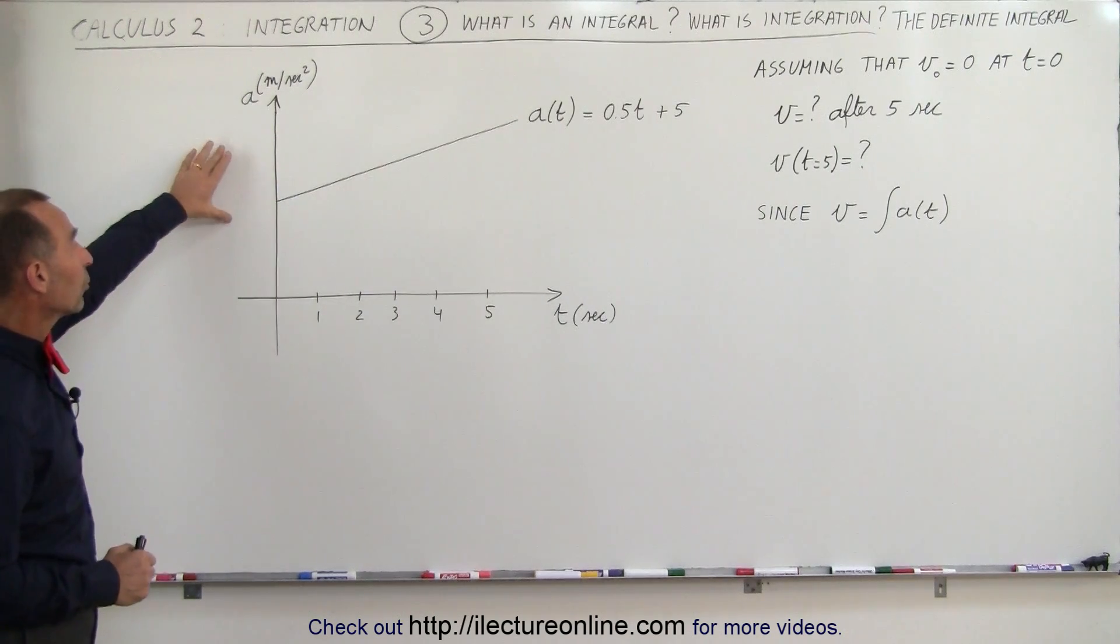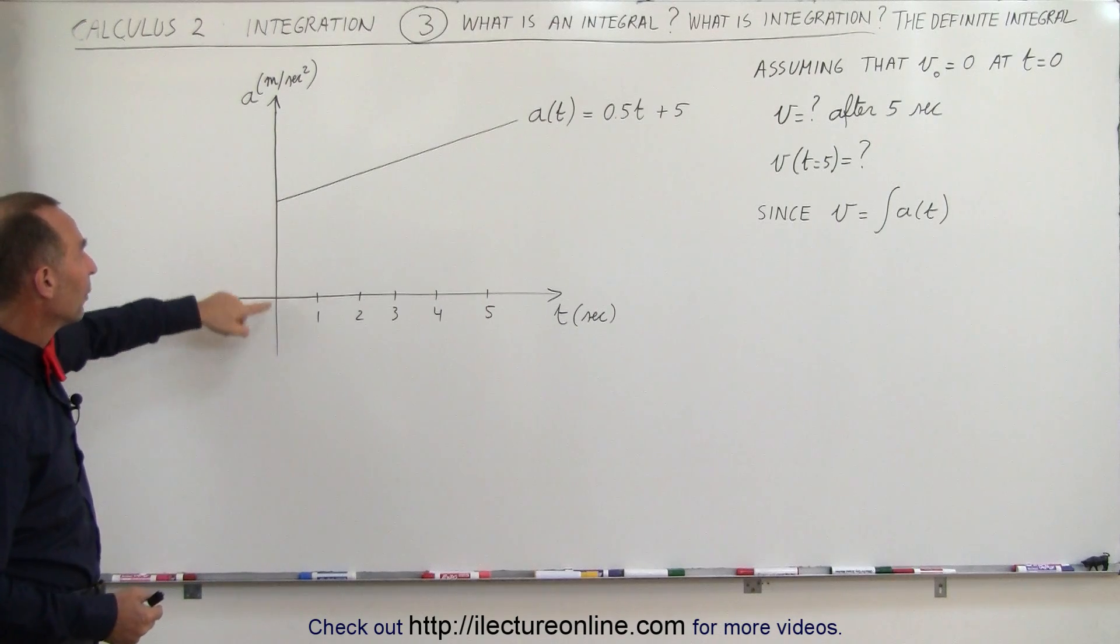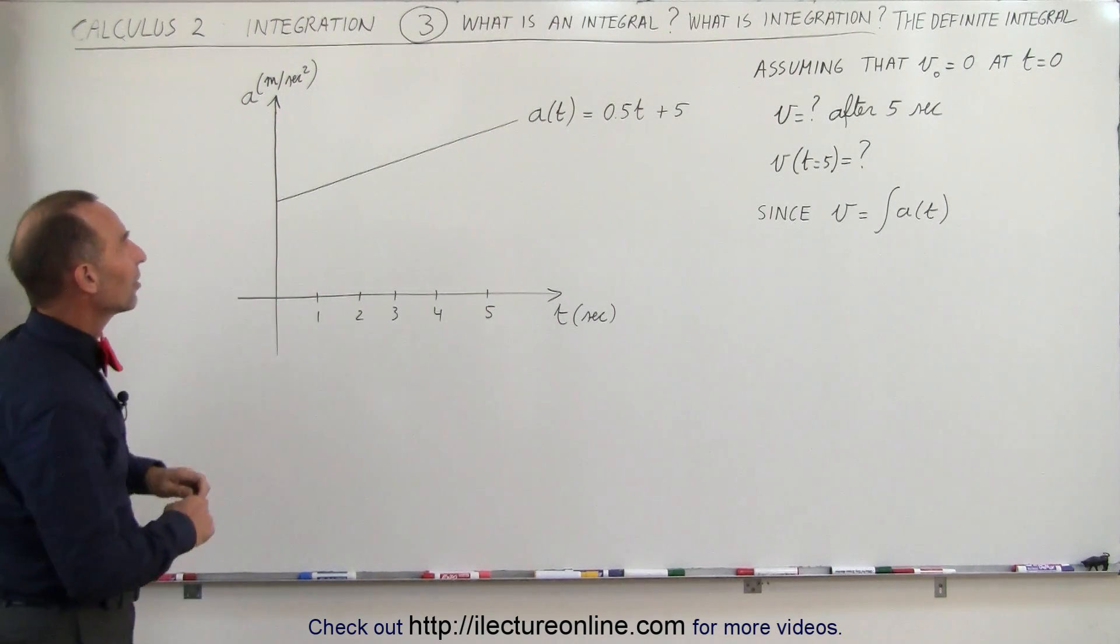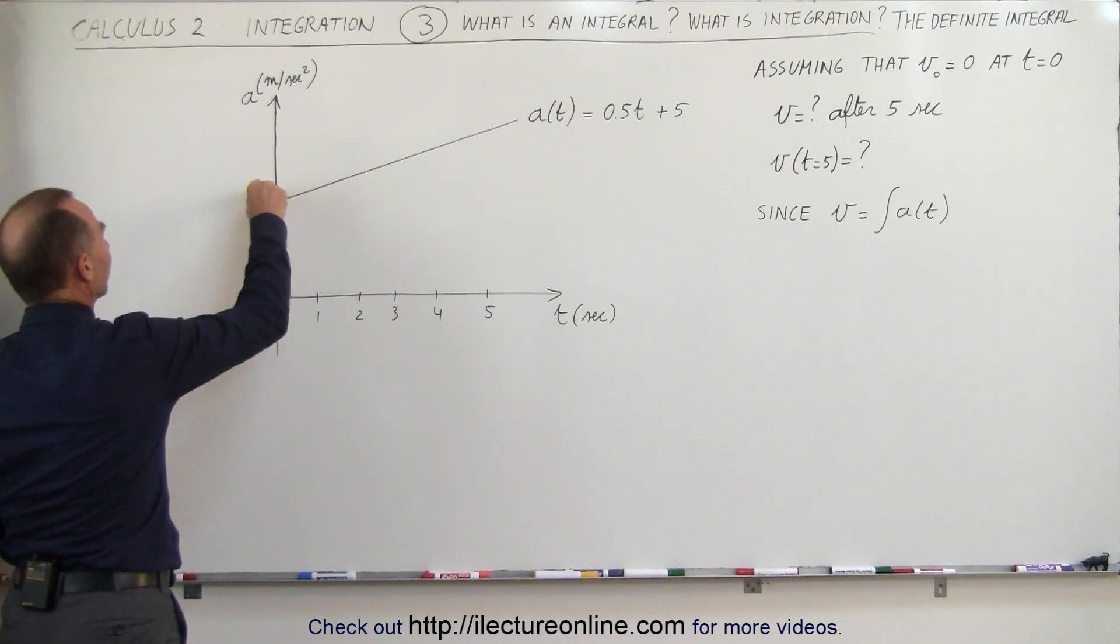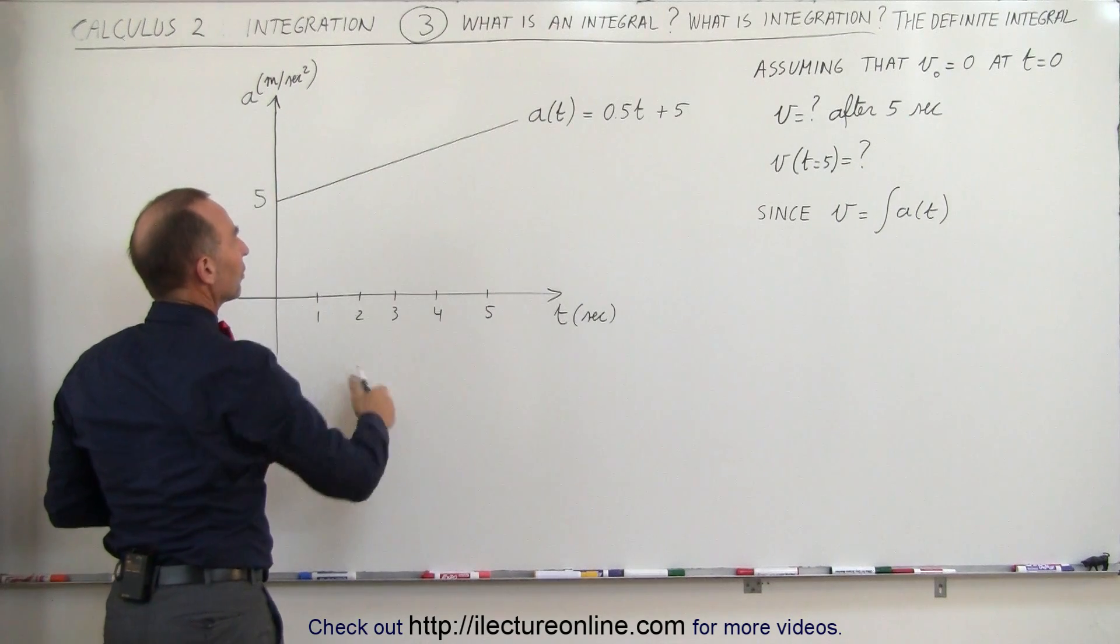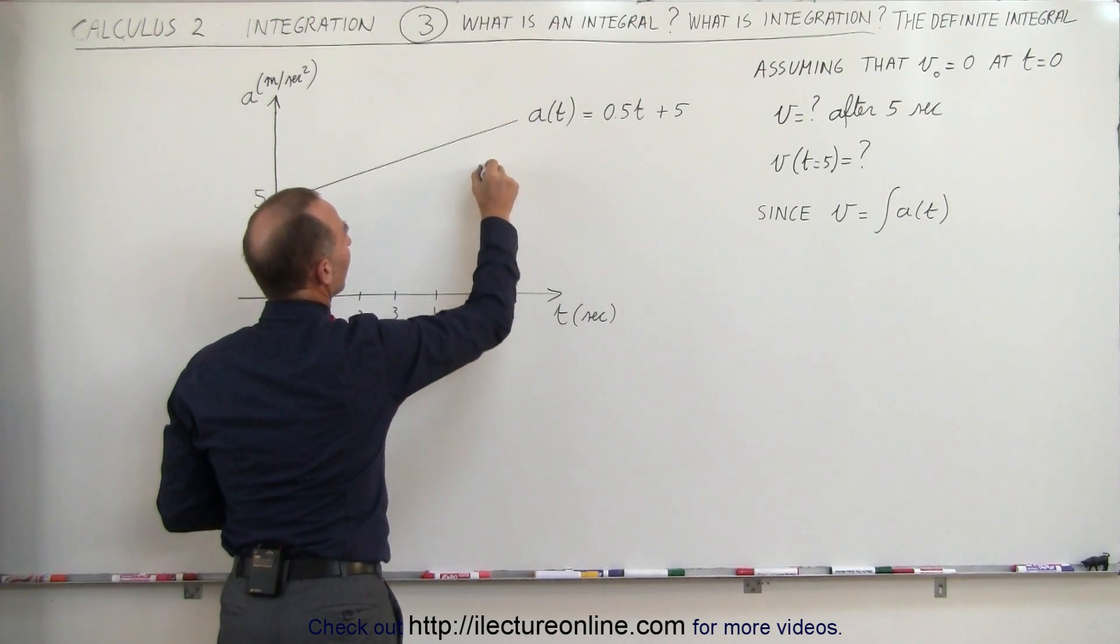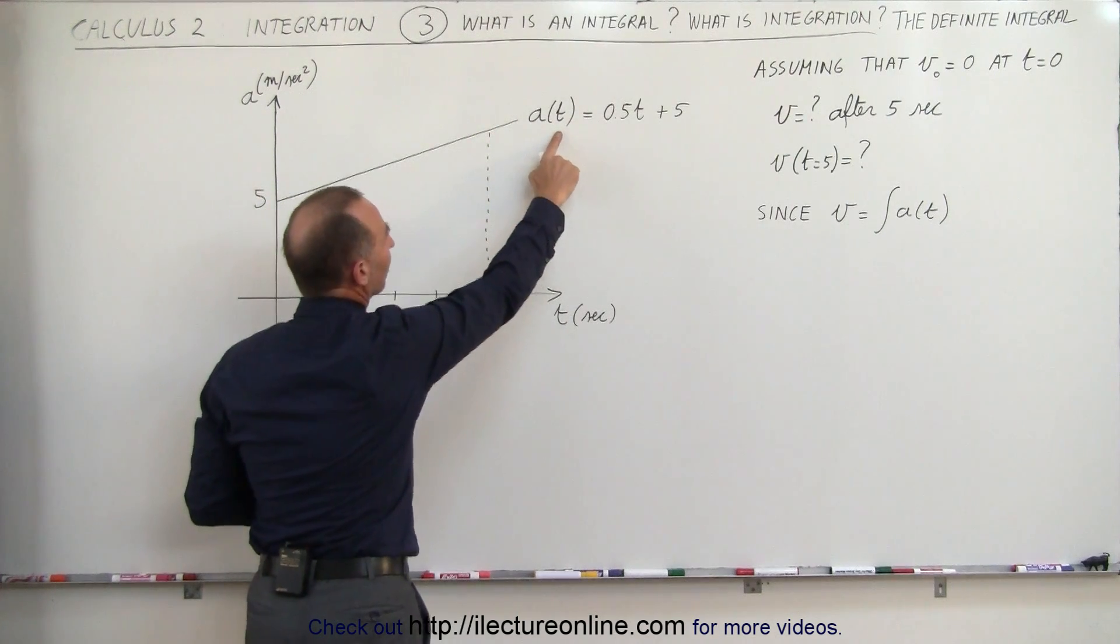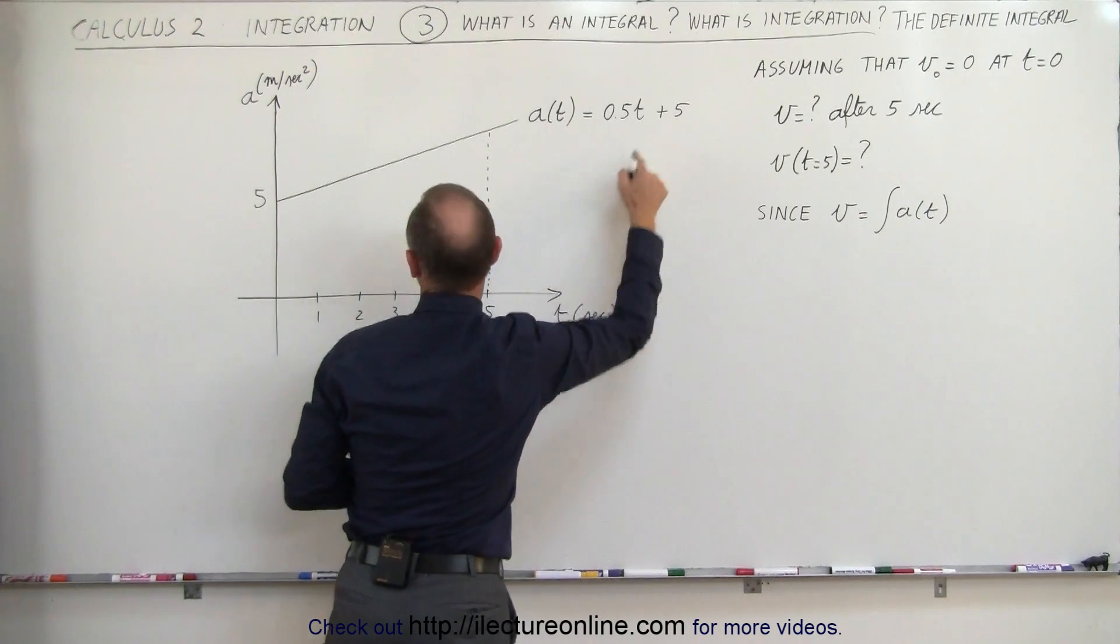Here we have a graph that represents the acceleration of an object. Notice that when time is equal to zero, the object is already accelerating at 5 meters per second. So let me go ahead and put the number 5 there. You can see that as time goes by, the acceleration increases over time. And after 5 seconds, based upon the equation right here, we can see the acceleration as a function of time is equal to 0.5 times t plus 5.